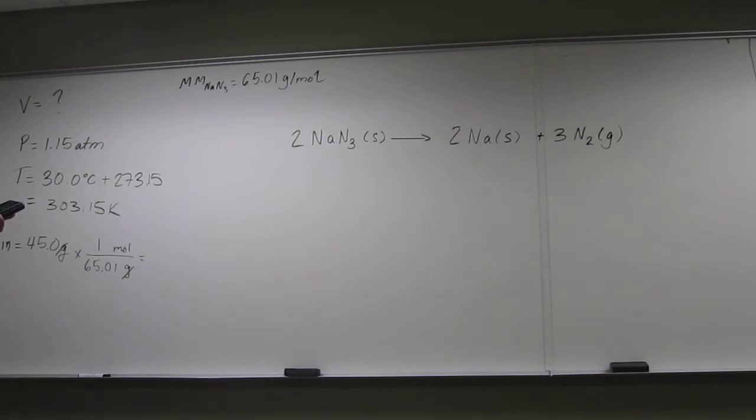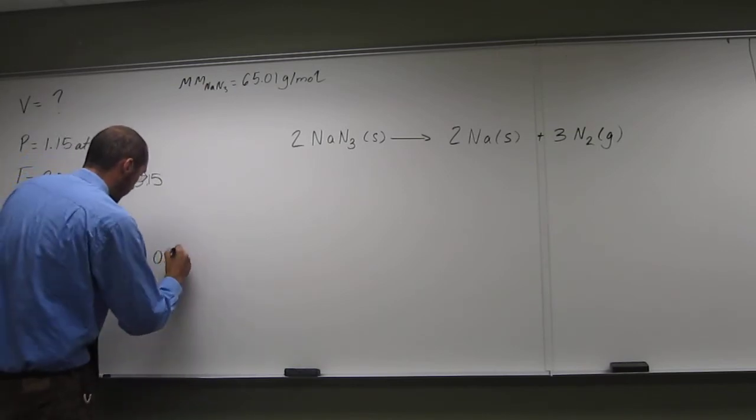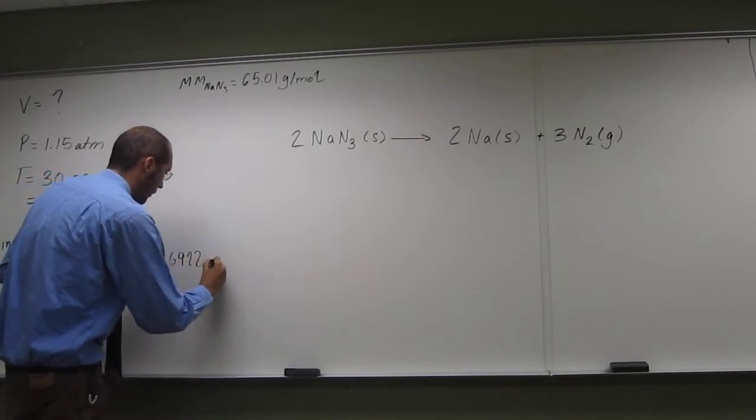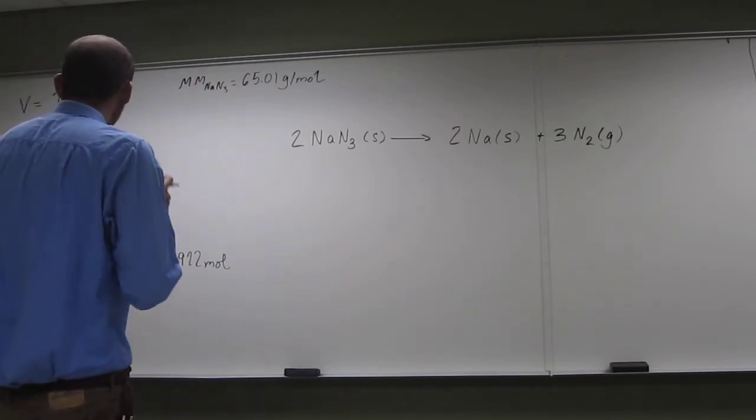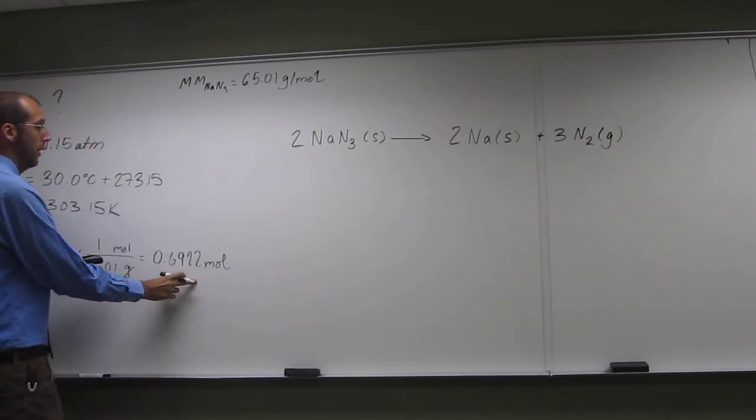So 65.01 grams per mole, grams cancel, and of course that's grams of sodium azide, so let's do this problem. So we're actually winging this one, I haven't done this one yet. So zero point, and we'll just do it to a few sig figs out, and at the end cut it down to the three sig figs. Okay, so that's how many moles of sodium azide we're starting with.